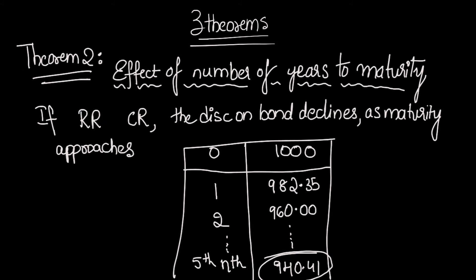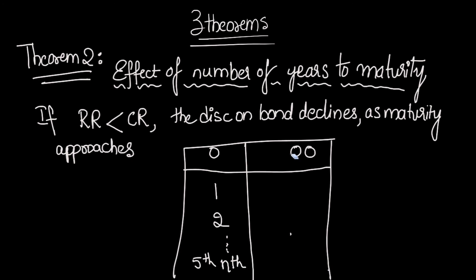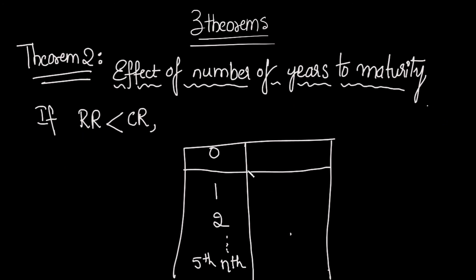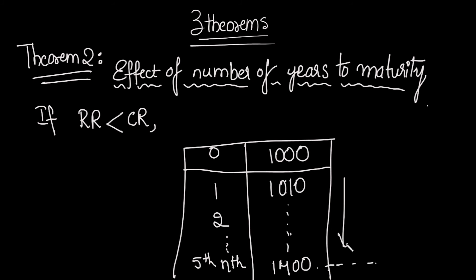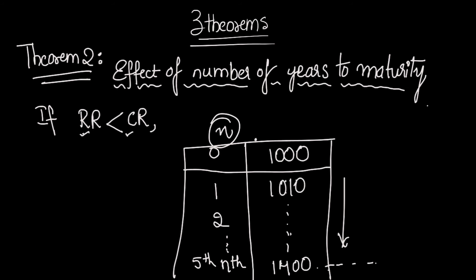If required rate of return is less than coupon rate, the bond price will not decline — it will keep increasing as the maturity period approaches. The bond will be at a premium, and in the final year it might be around 1400 or so. So required rate of return and coupon rate both play a role along with the number of years to maturity. This concludes Theorem 2.